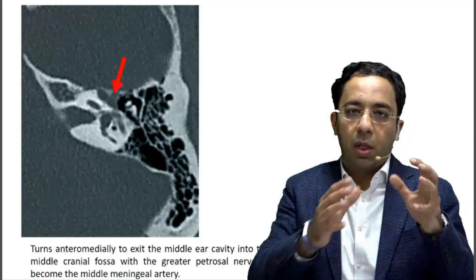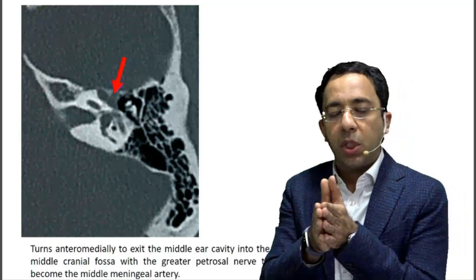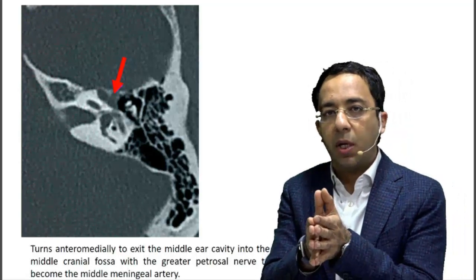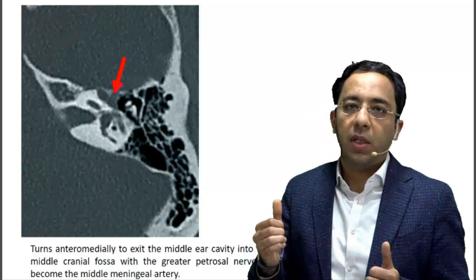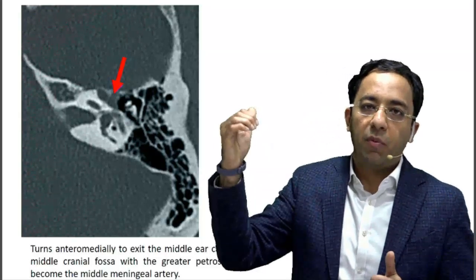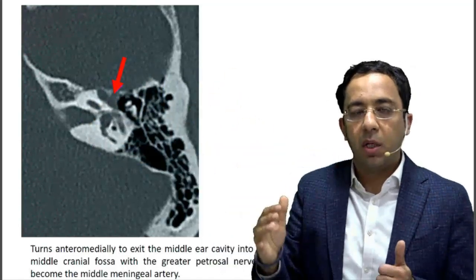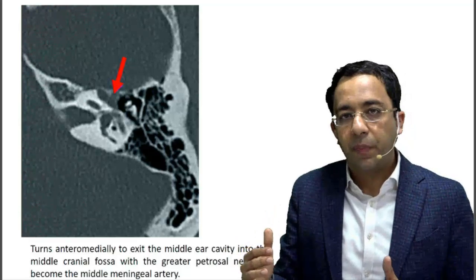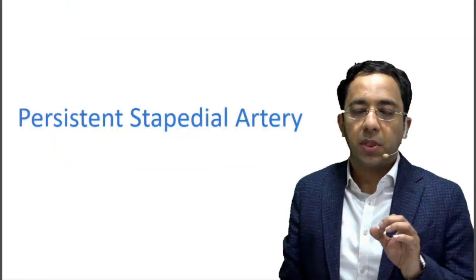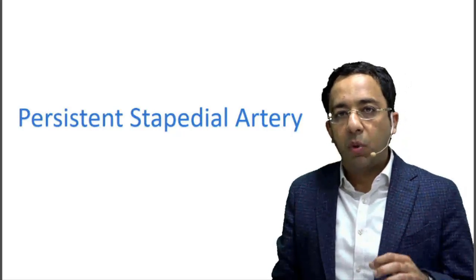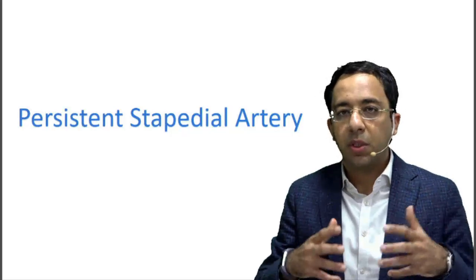To summarize the entire scenario: we saw absence of the foramen spinosum and a branch arising from the internal carotid artery, going posterior and lateral to it, entering the middle ear, ascending along the cochlear promontory between the two crura of the stapes, then exiting the middle ear into the middle cranial fossa along with the greater petrosal nerve. This is the classic course — the diagnosis is persistent stapedial artery.